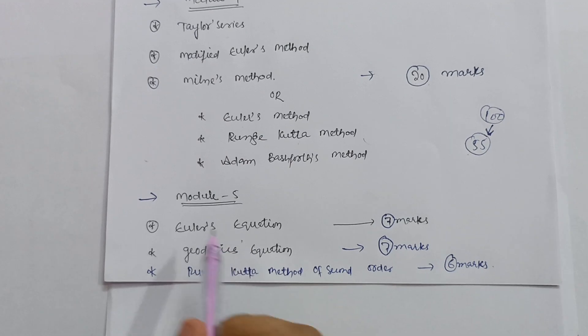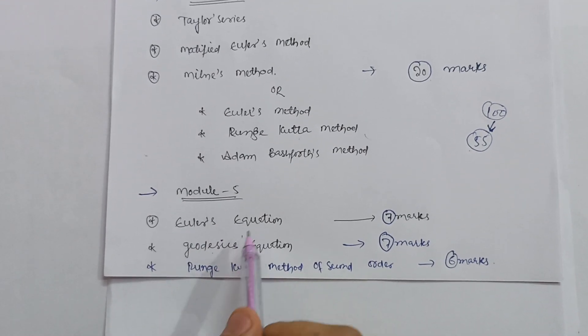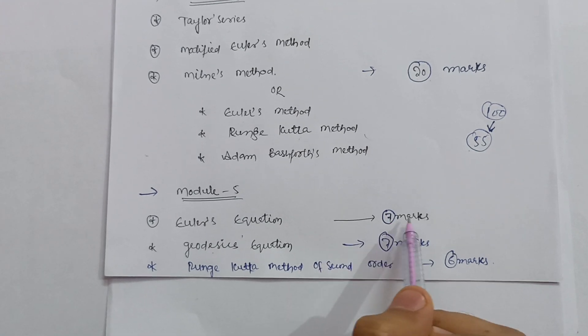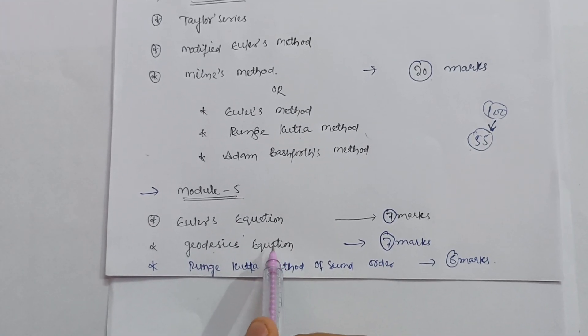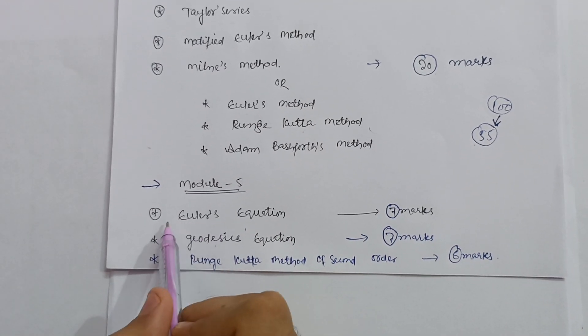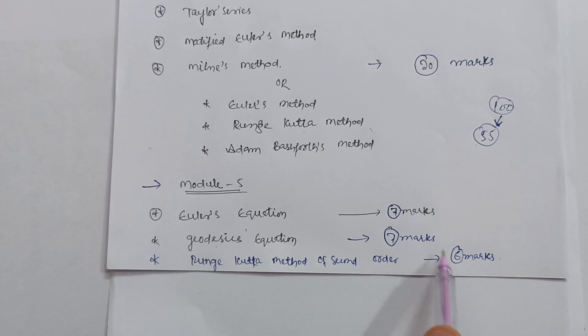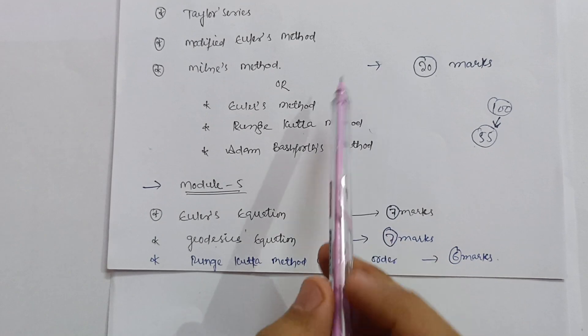You just remember Euler's Equation, and it will also carry 7 marks. And geodesics, if you don't prepare also, then don't worry. Just remember only one formula in this particular module, that is Euler's Equation and Runge-Kutta Method. It will carry 13 marks over here. If we total it, it becomes 20 plus these 21 becomes 41.